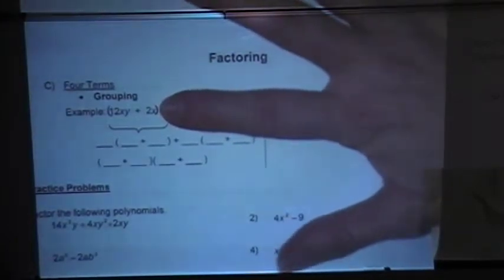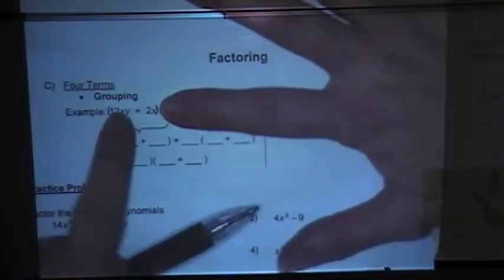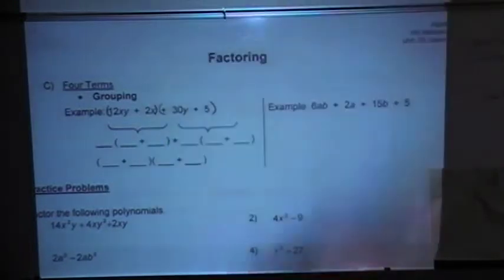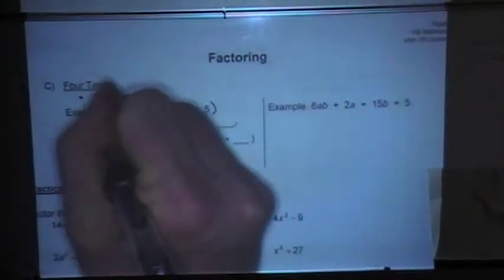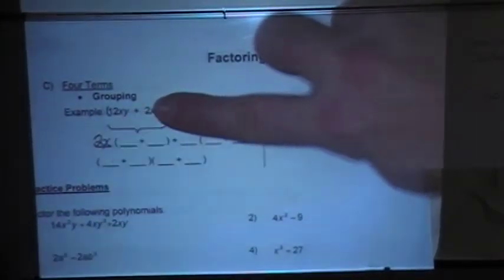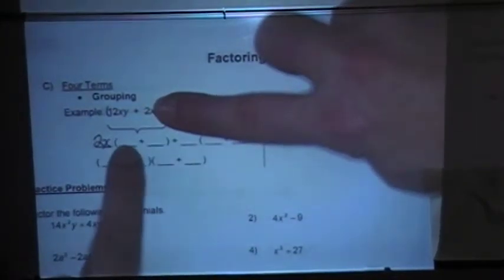So I'm going to look at just that 12xy plus 2x and factor out a GCF because there is something in common between the two of those. It's a 2x, so I'm going to factor out 2x. And if I took a 2x out of this binomial, I would be left with 6y plus 1.